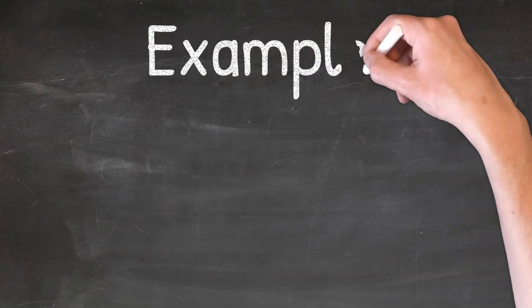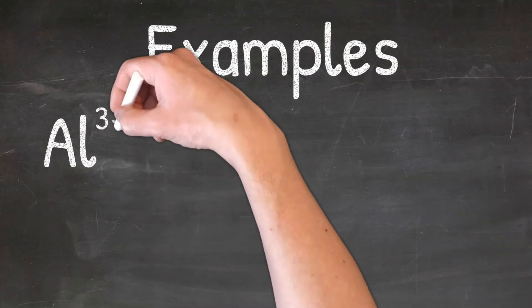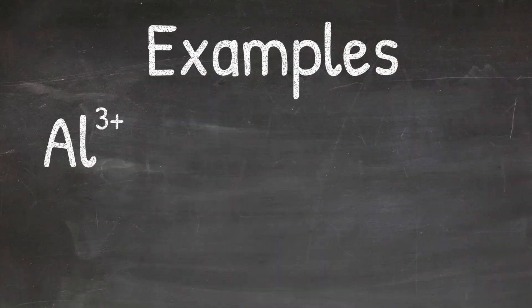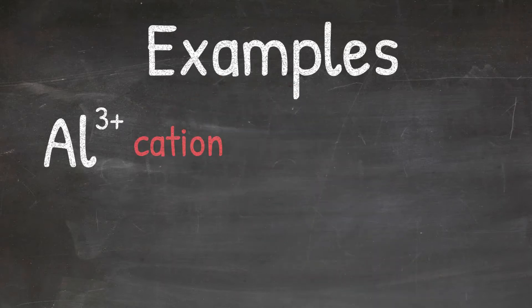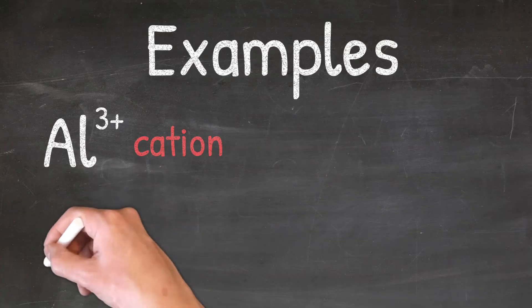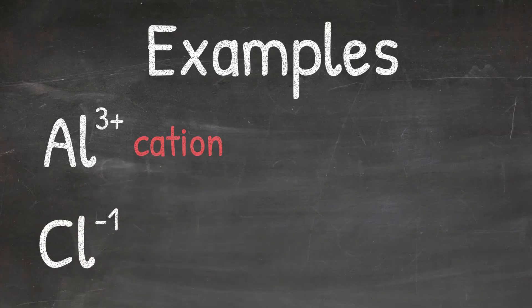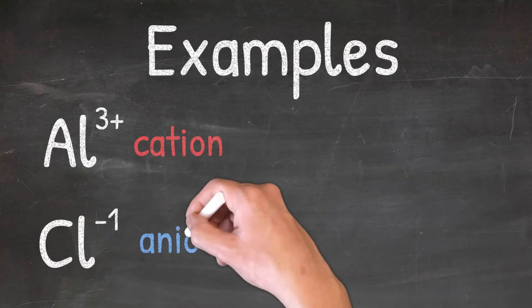Let's look at some examples. Our first example here, we'll look at Al3+. Al3+ is a cation because it has a positive charge. Our next example we'll look at is Cl-. Cl- would be considered an anion because it has a negative charge.